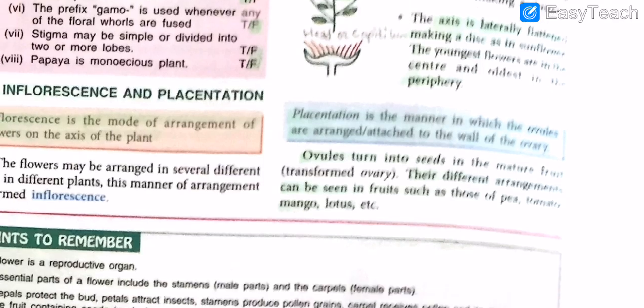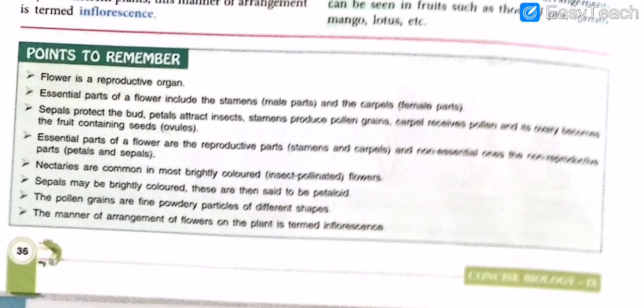Some points to remember from this chapter: a flower is a reproductive organ, and its essential parts include the stamens — all the key points you can review the day before your examination. With this we come to the end of this chapter. I hope you all understood each and every part of it. If you have any doubts, post them in the comment section below and I'll be happy to solve them. See you in the next video!